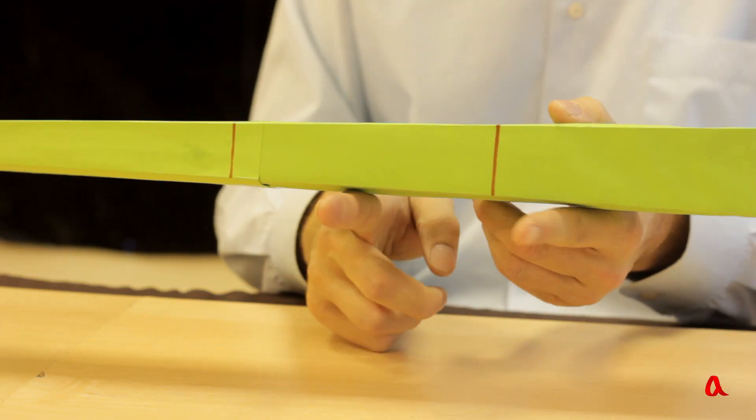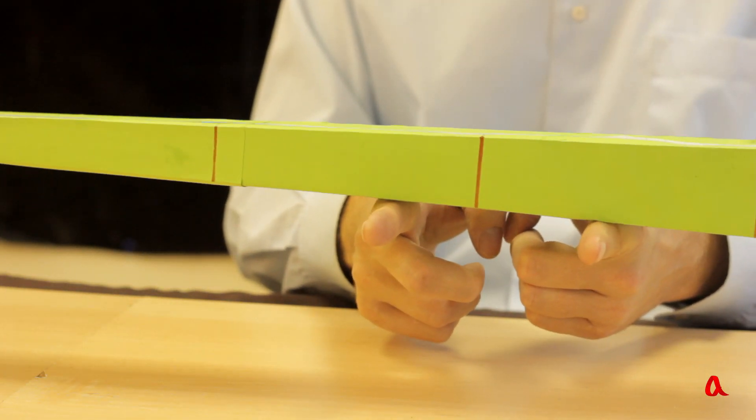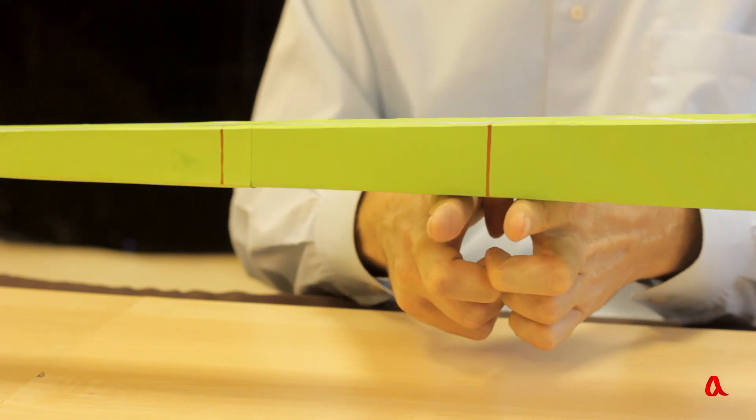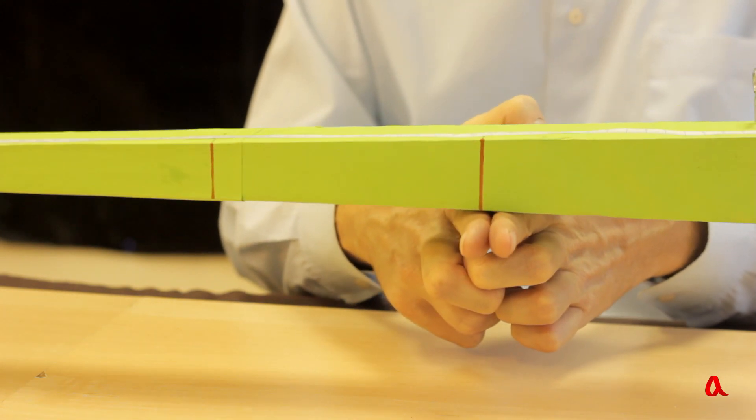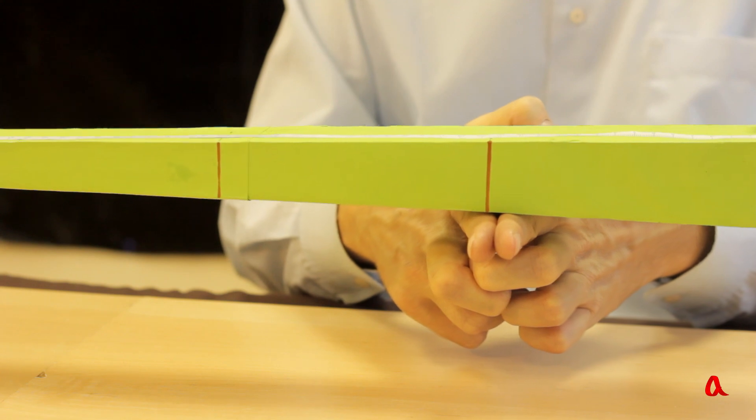To check it, we place the beam onto two index fingers and start shifting them. The fingers come together in the marked point.